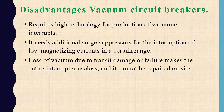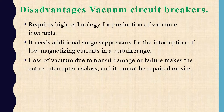The disadvantages of the vacuum circuit breaker: first, it requires high technology for production of vacuum interrupters - high technology is needed to manufacture this circuit breaker. Second, it needs additional surge suppression equipment for interruption of low magnetizing currents in certain ranges. Third, loss of vacuum due to damage or failure makes the interrupter useless - if the cylinder or bottle loses its vacuum and air enters accidentally, the entire device fails and cannot be repaired on the spot.